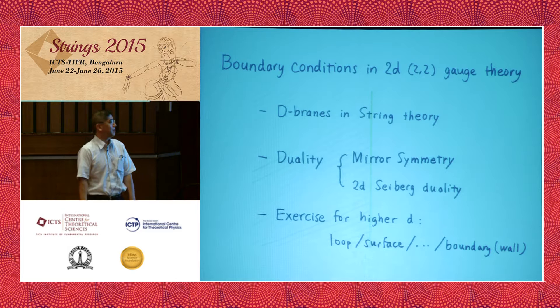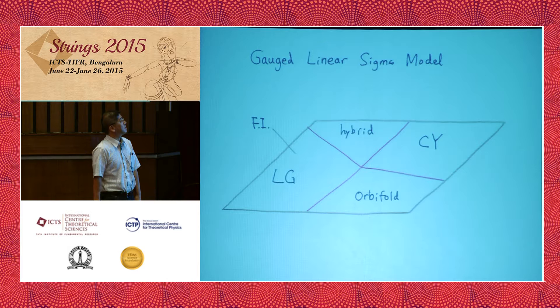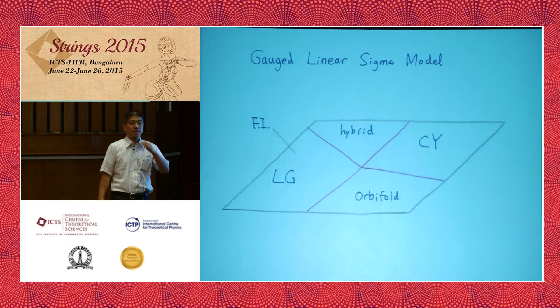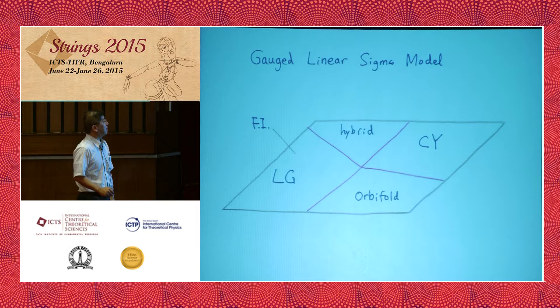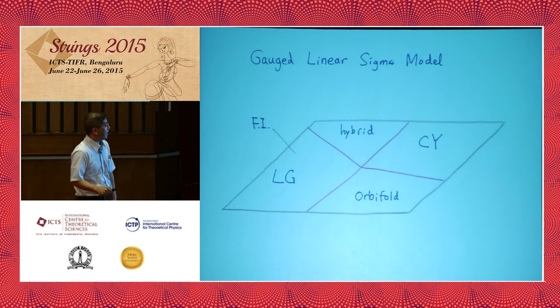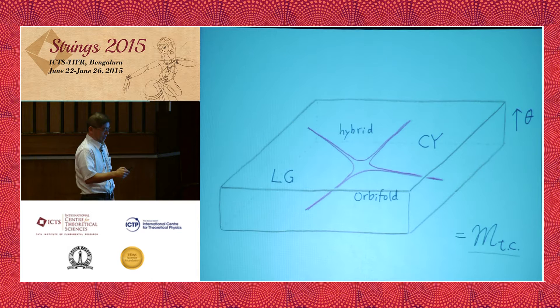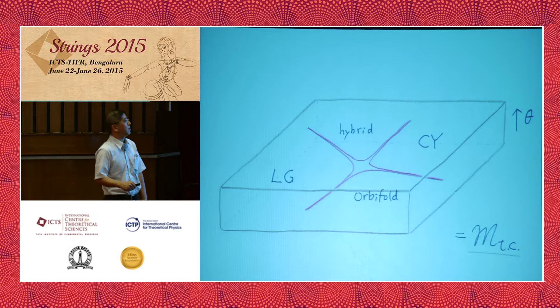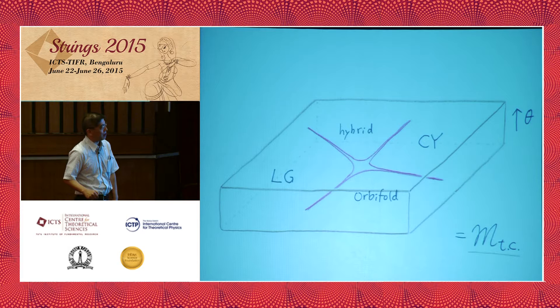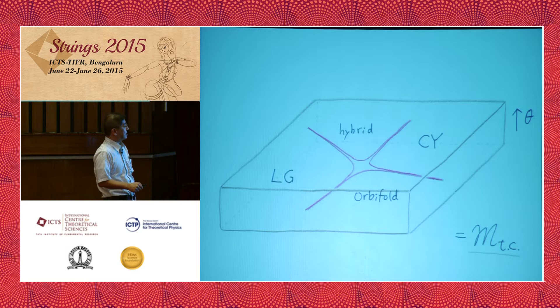There is a very interesting class of theories called the gauge linear sigma model, introduced by Edward Witten. This theory has a space of FI parameters decomposed into chambers called phases. The theory at each phase typically reduces to familiar theories like nonlinear sigma models, Landau-Ginzburg models, orbifolds of them, or hybrids of these two. This space is complexified by the theta angle, and quite often this space is the moduli space of infrared superconformal fixed points — more precisely, the twisted chiral part of the moduli space.